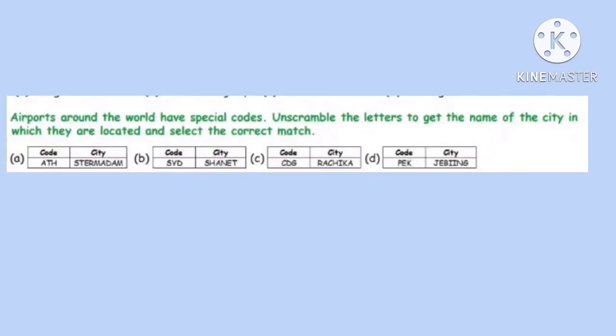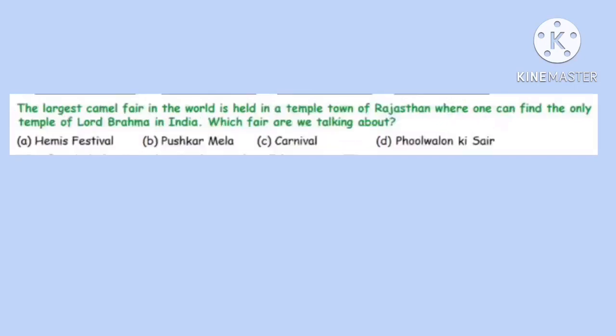Question 8. Airports around the world have special codes. Unscramble the letters to get the name of the city in which they are located and select the correct match. Correct option is D: the city is Beijing and the code is PEK.